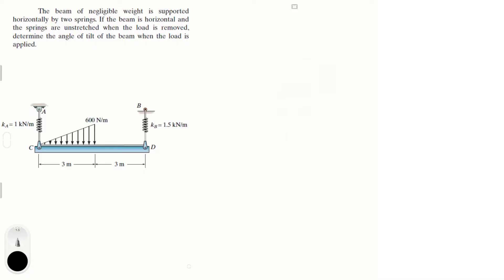Alright guys, let's do this problem that says the beam of negligible weight is supported horizontally by two springs. If the beam is horizontal and the springs are unstretched when the load is removed, determine the angle of tilt of the beam when the load is applied.